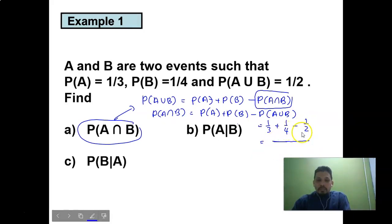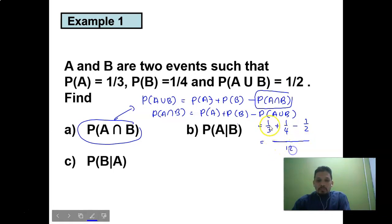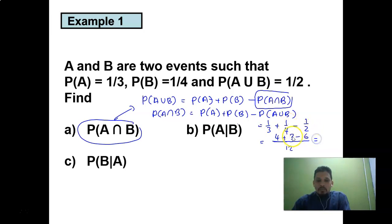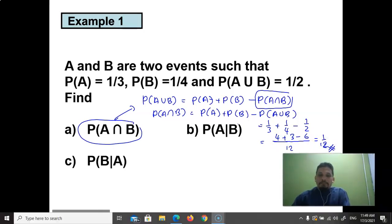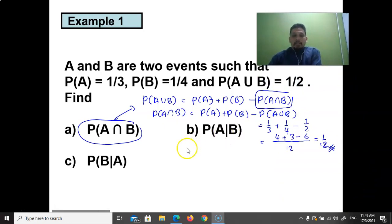Making a common denominator of twelve: one over three becomes four over twelve, one over four becomes three over twelve, and one over two becomes six over twelve. So four plus three minus six equals one, giving probability of A intersect B equals one over twelve.